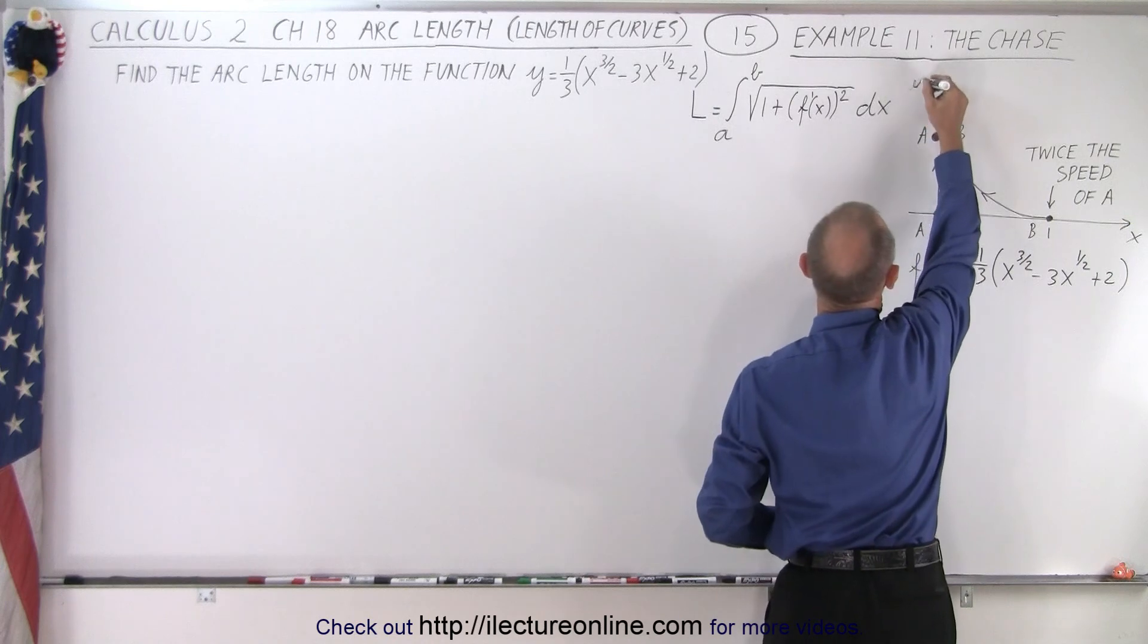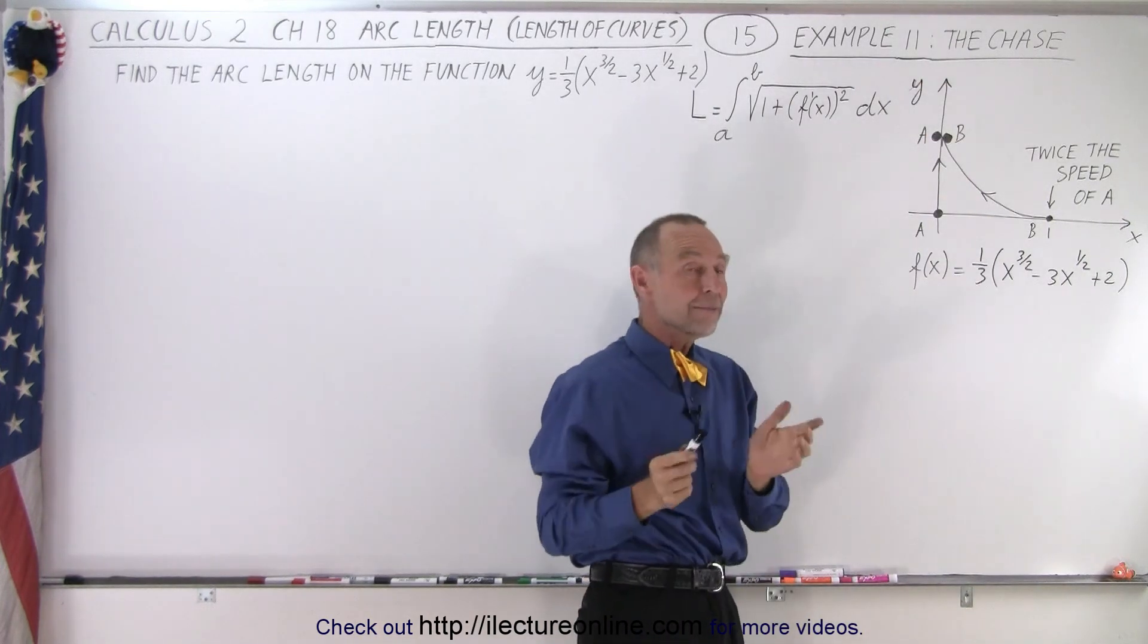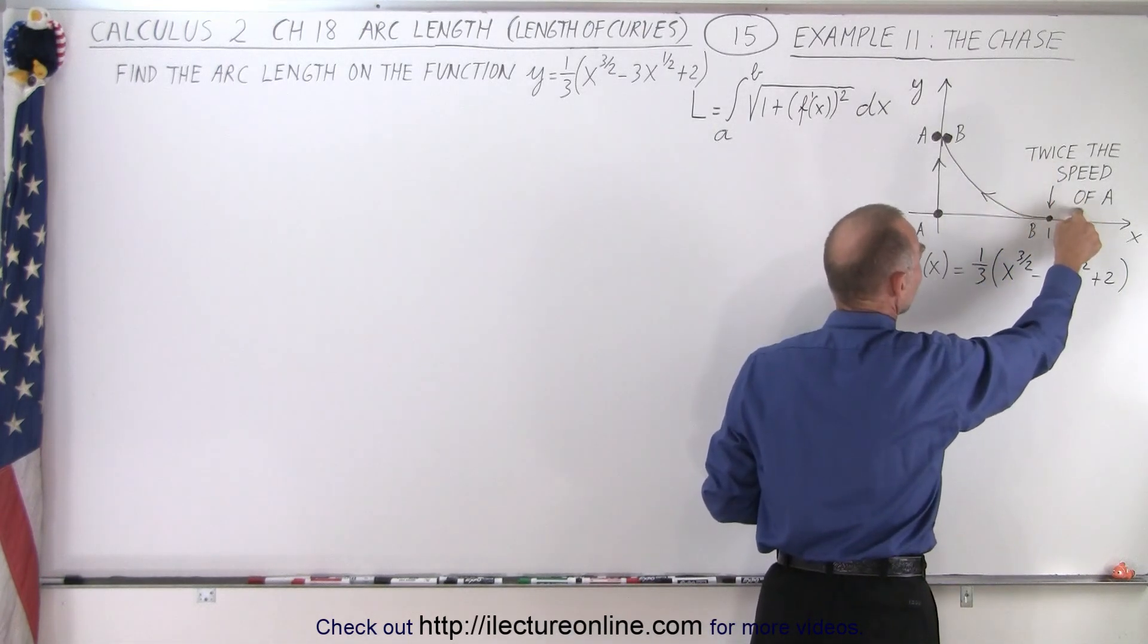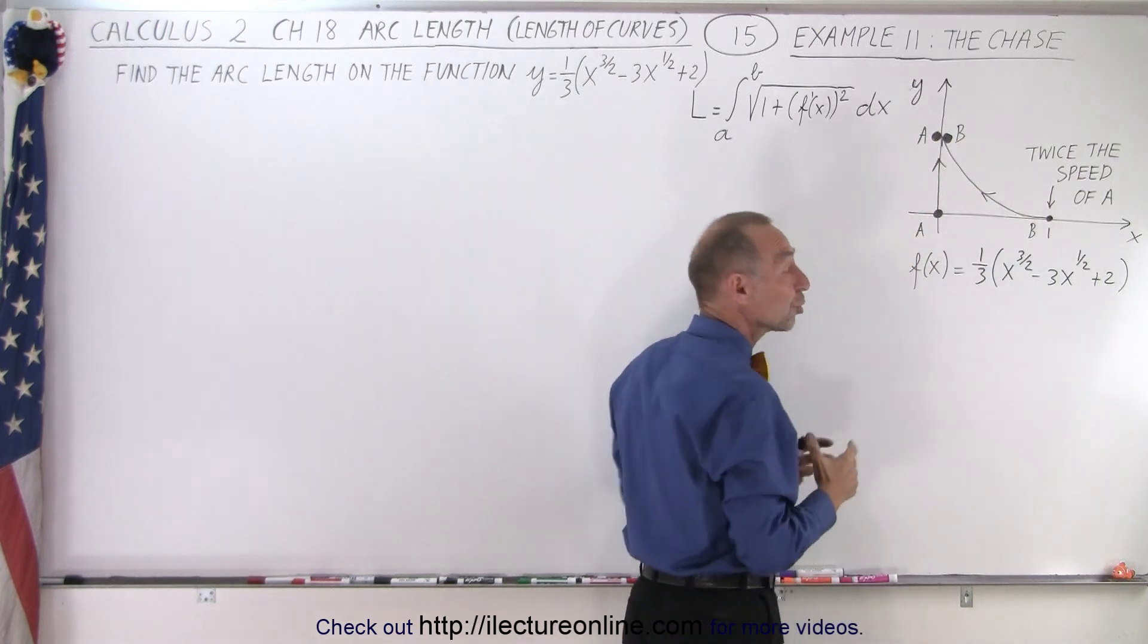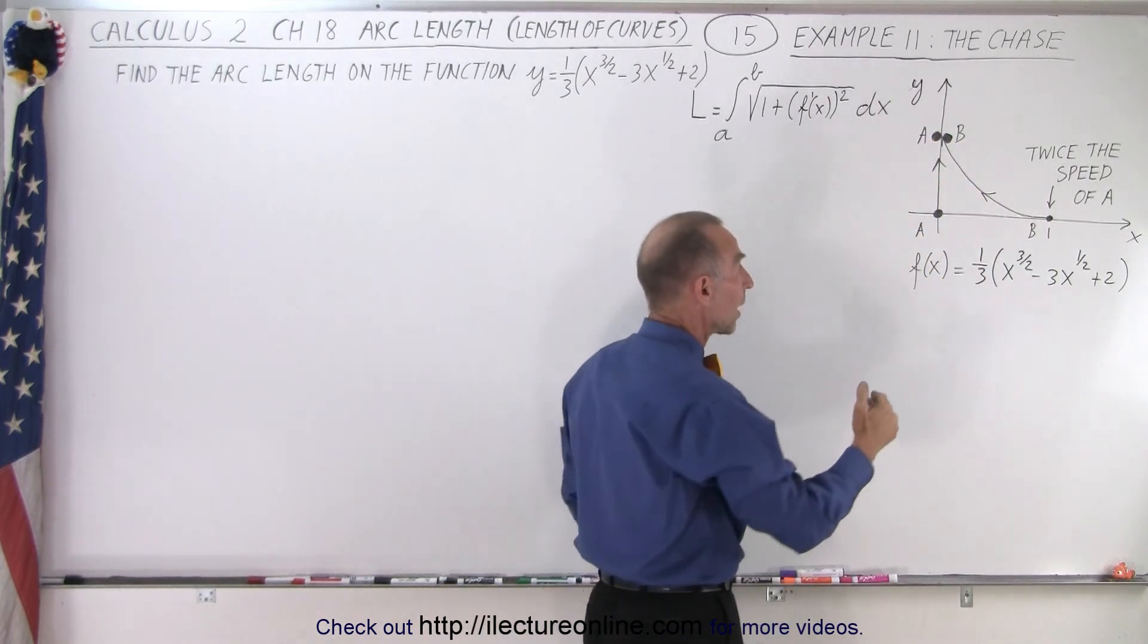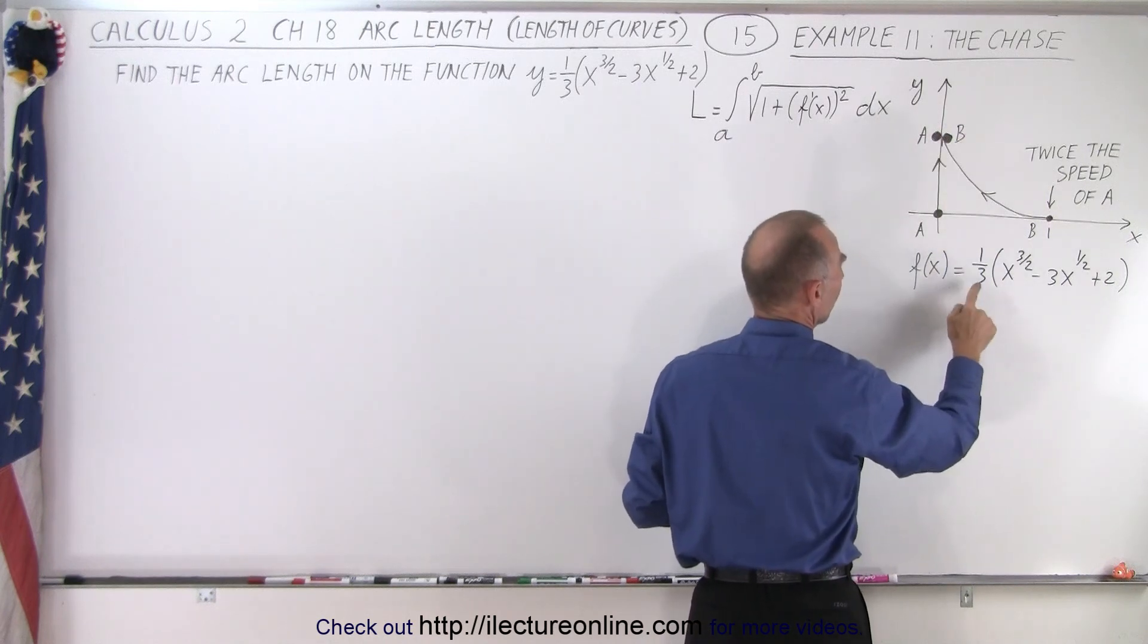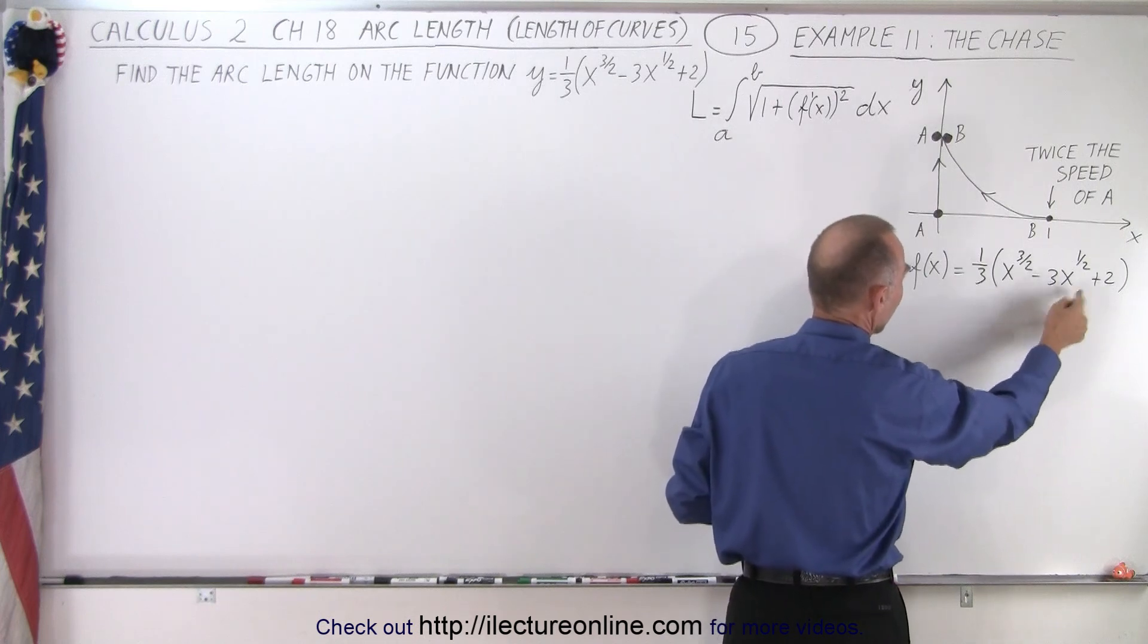So there's the y-axis right here. Now, the reason why they meet is because object B moves at twice the speed of object A. So eventually object B will catch object A. And the equation that describes the path that object B takes is right here: f of x equals one-third the quantity x to the three-halves minus three times x to the one-half plus two.